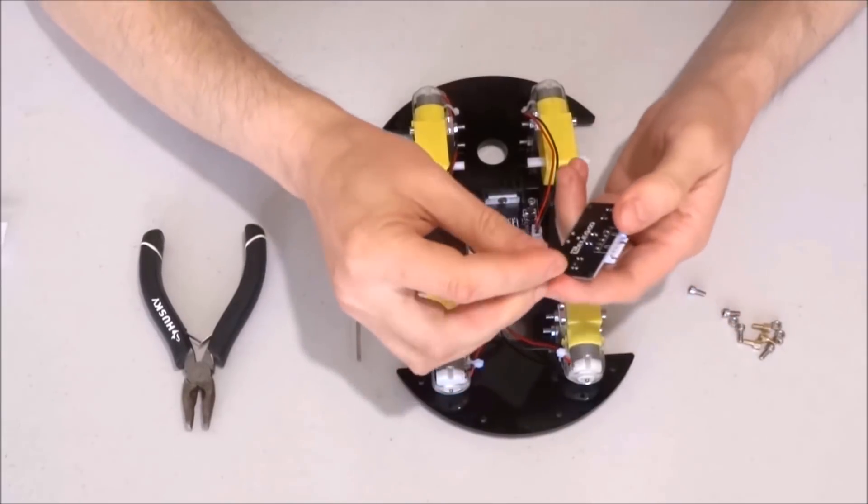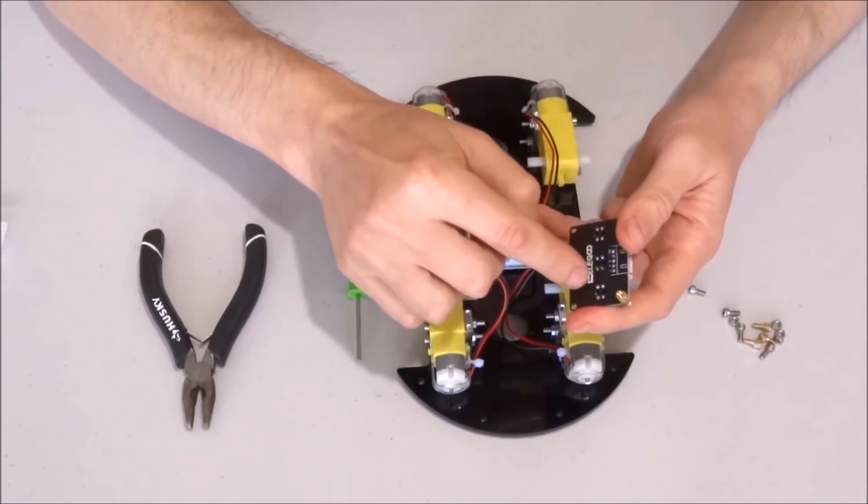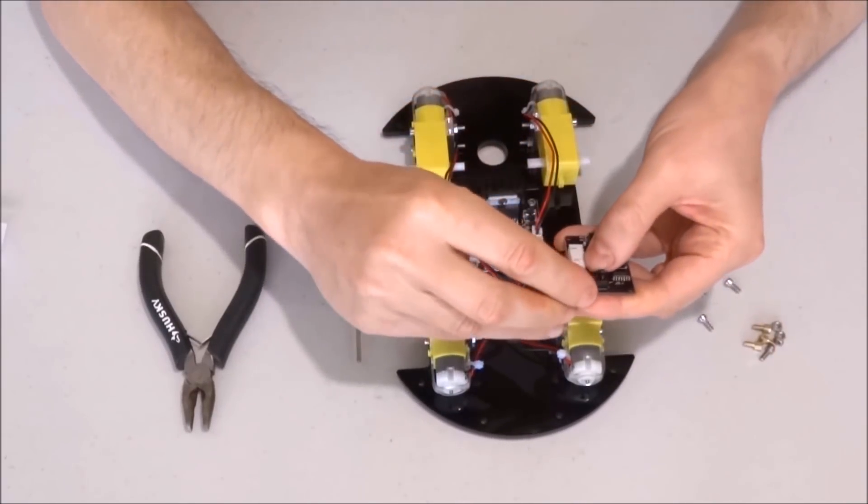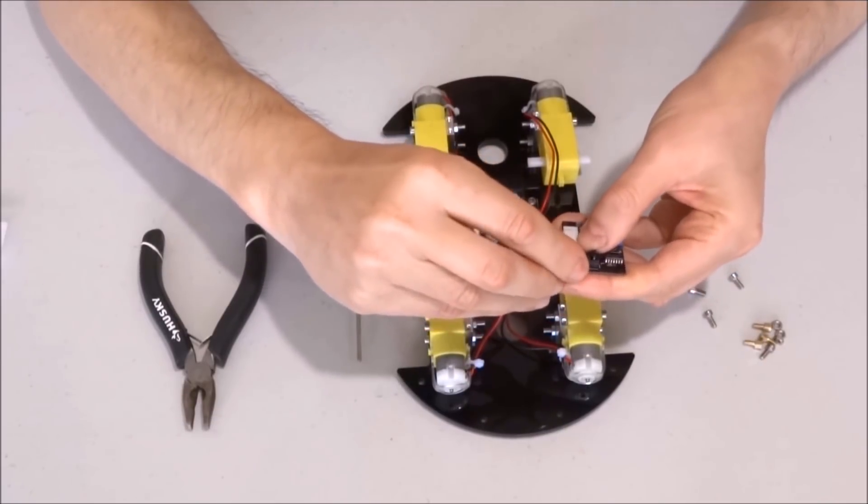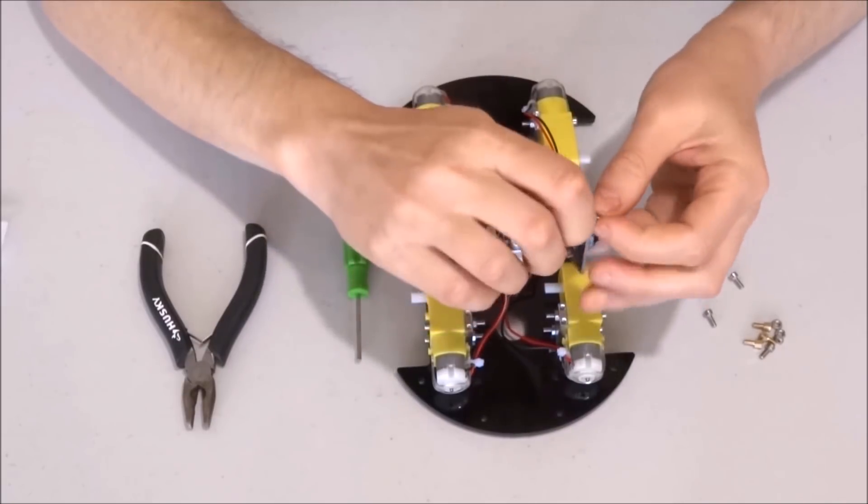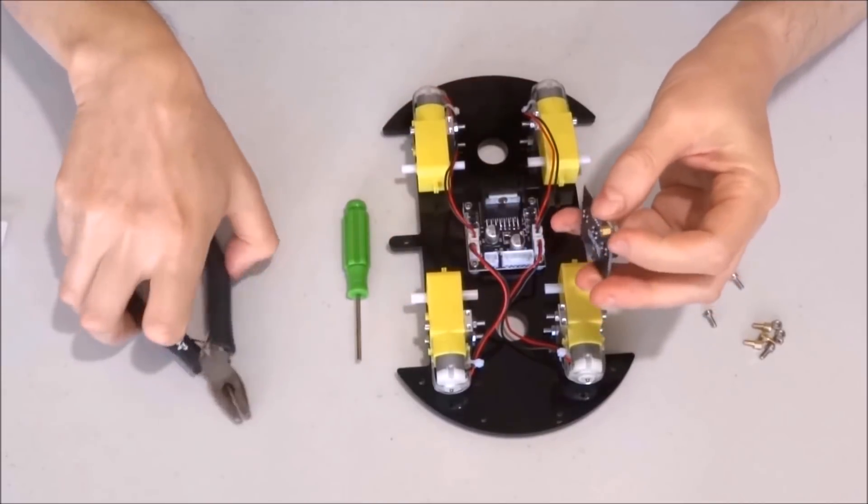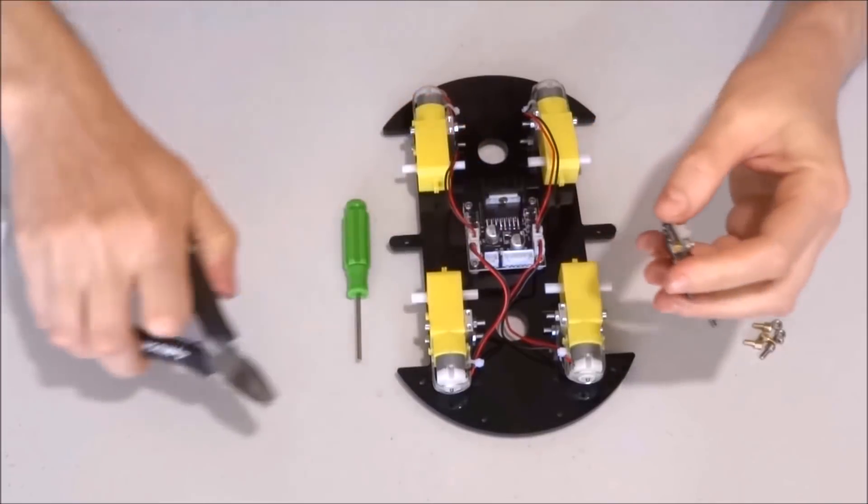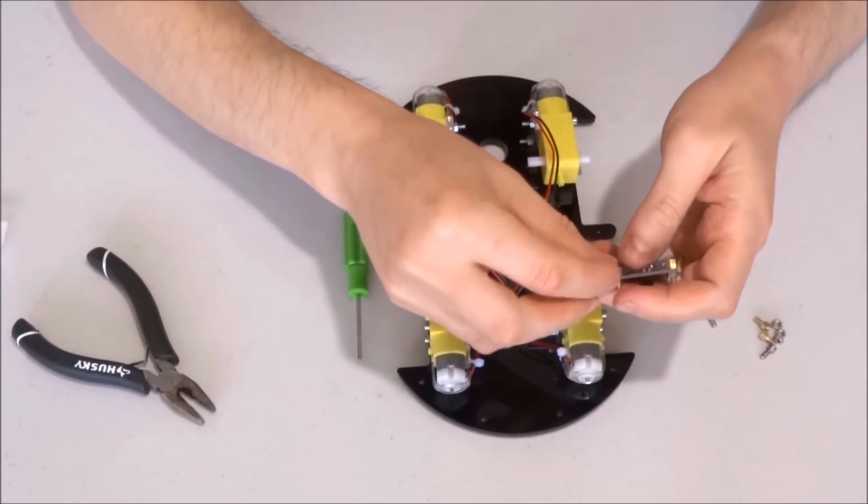Take the spacer standoff, insert it from the back side of the board toward the front, put a nut and tighten it together. Here is one of the very few places where you may need to use pliers to tighten. Not sure if it is necessary, but definitely you may consider.